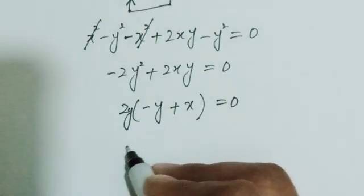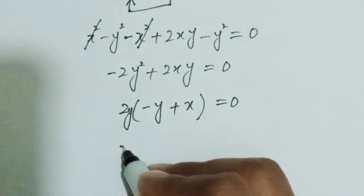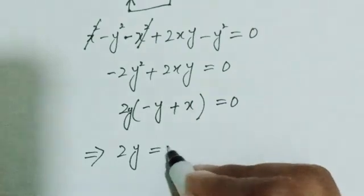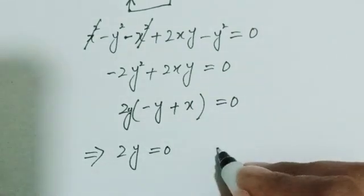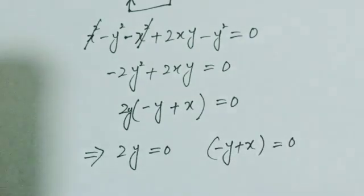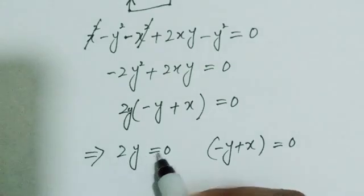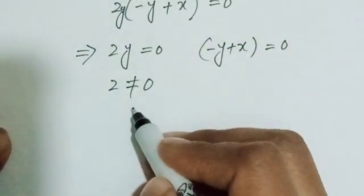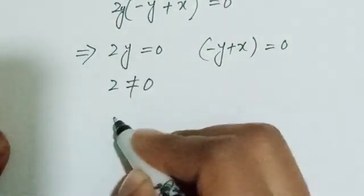Factoring out 2y, what's left inside the bracket is (x minus y), which equals zero. This implies two cases: 2y equals zero, or (x minus y) equals zero. Since 2 is a constant and cannot be zero, from 2y equals zero we get y equals zero as our first root.